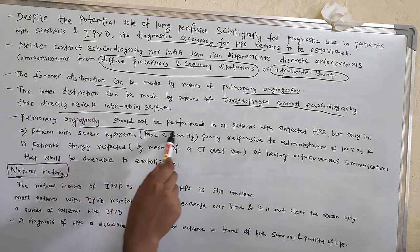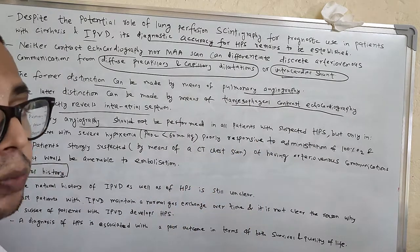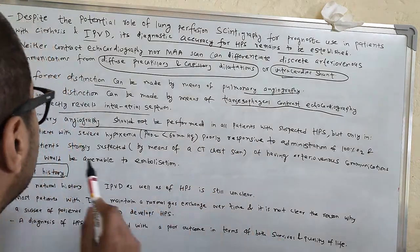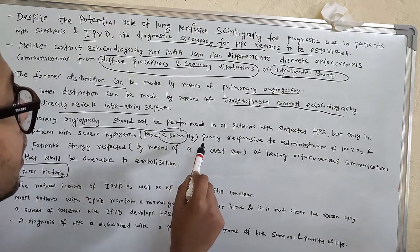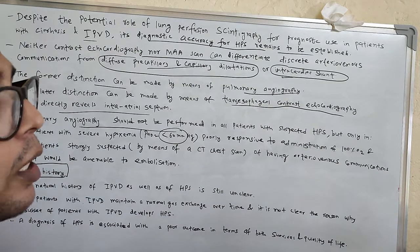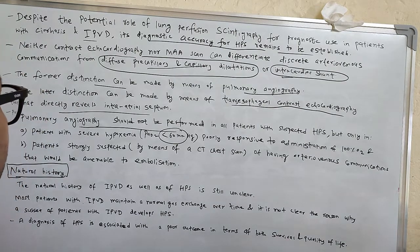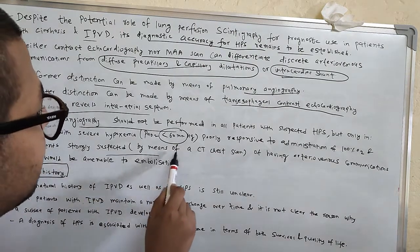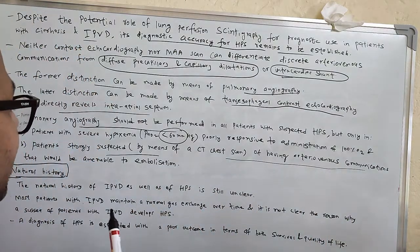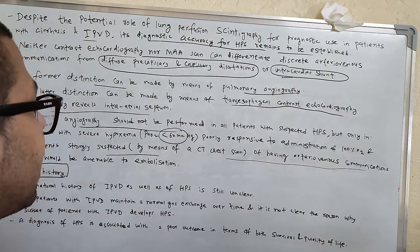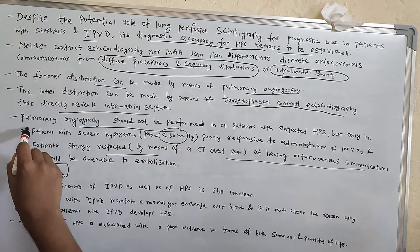Pulmonary angio should not be performed in all patients with suspected HPS, but only in patients with severe hypoxemia PO2 less than 60 mmHg poorly responsive to administration of 100% oxygen, and patients who are strongly suspected by means of CT chest of having arteriovenous communication that would be amenable to embolization.